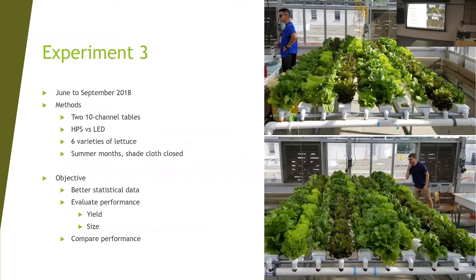Experiment three ran from June to September of 2018 — also three harvest cycles. We went down to six varieties to increase our sample size by more than double and focus specifically on morphological factors. These were summer months, so the shade cloth was closed again, and we were concerned our lighting treatment might be somewhat diluted by increased ambient light. The objective was better statistical data, evaluating specifically yield and size — height and diameter.